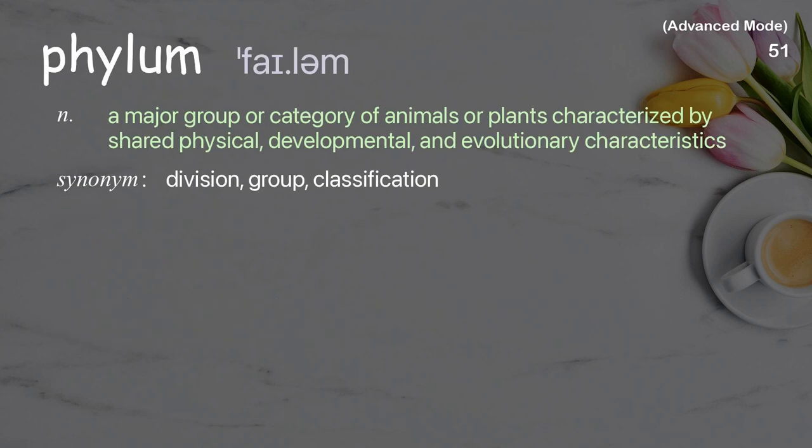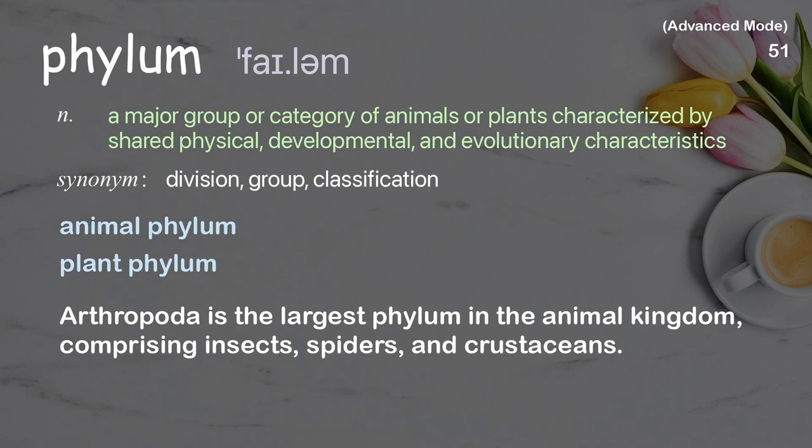Phylum: A major group or category of animals or plants characterized by shared physical, developmental, and evolutionary characteristics. Examples: animal phylum, plant phylum. Arthropoda is the largest phylum in the animal kingdom, comprising insects, spiders, and crustaceans.